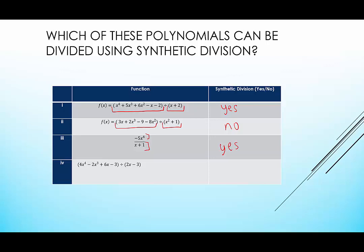And the last example, we have our dividend here, and our divisor is 2x minus 3. While it is a linear factor, it's not in the appropriate x minus k form because of that 2, we would not be able to use synthetic division.